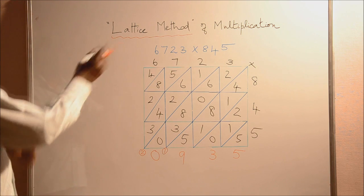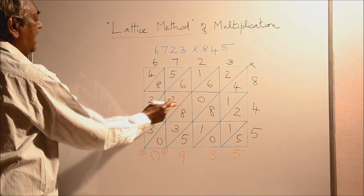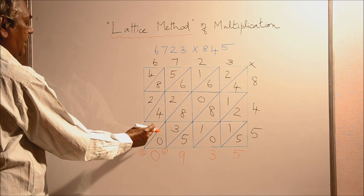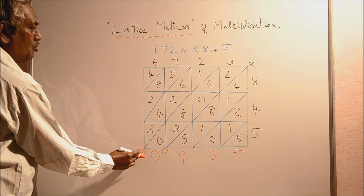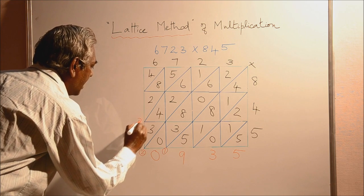Now we go to the next diagonal. 1 plus 6, 7. 7 plus 2, 9. 9 plus 4, 13. 13 plus 3, 16. 16 plus this 2, 18. So we write here 8. Then 1 to be carried over.